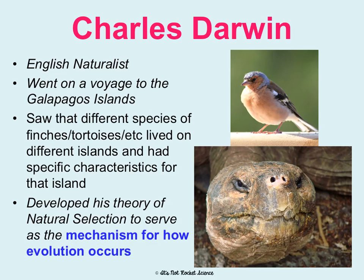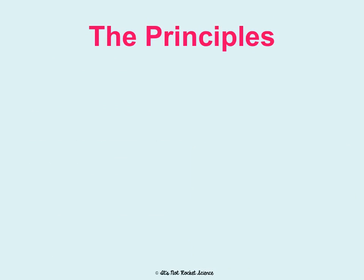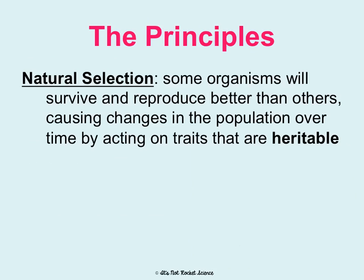It's really important to understand that Darwin did not come up with evolution — that was an idea scientists had been hypothesizing about for a while. But Darwin was the first one to explain how it actually works. Natural selection states that some organisms will survive and reproduce better than others, and this will cause changes in the population over time by acting on traits that are heritable.